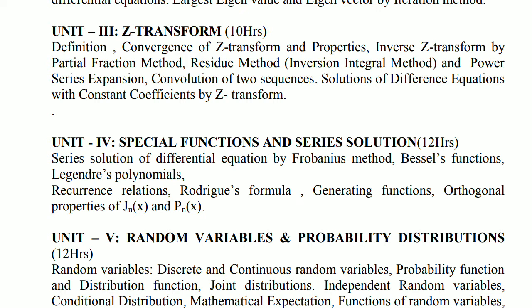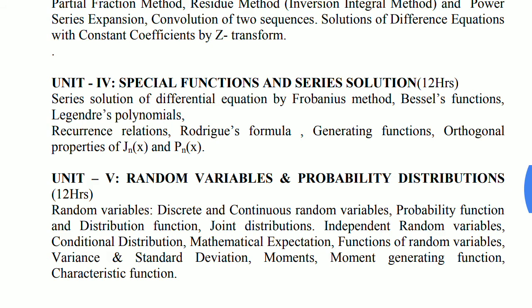Unit number 4, Special Functions and Series Solution. There is no fixed criteria for which part comes in either or or, but there is a topic of the Frobenius method. If you are done with all the other topics, then go for Frobenius method because it is very lengthy — problems require about 30 to 40 minutes to solve one question. The easy topics are Legendre polynomials and Rodrigues' formula. There are also topics on generating functions and orthogonal properties of Jn(x) and Pn(x), but those questions are a little lengthy — do those only if you have time.